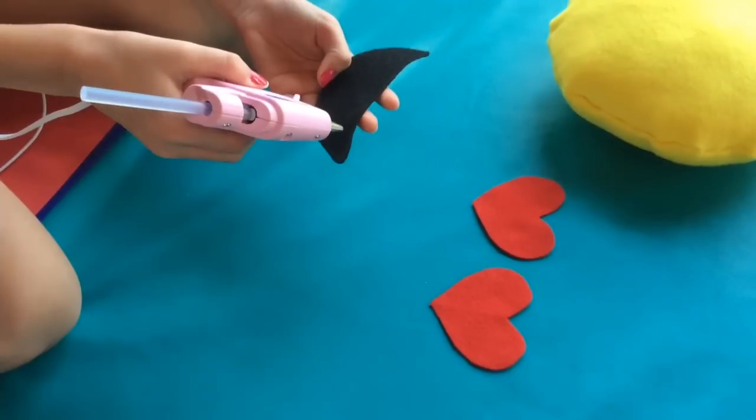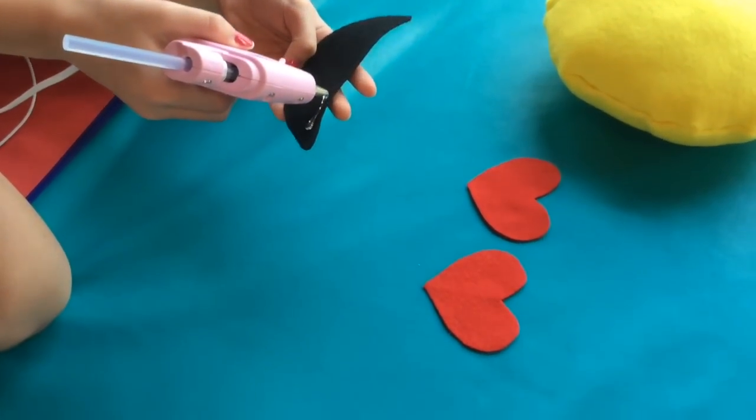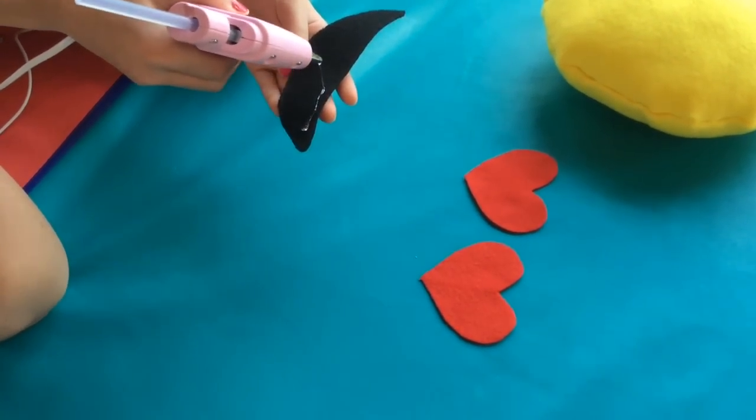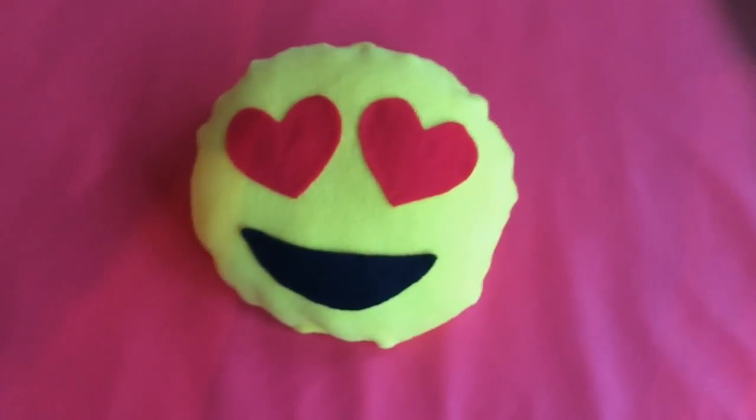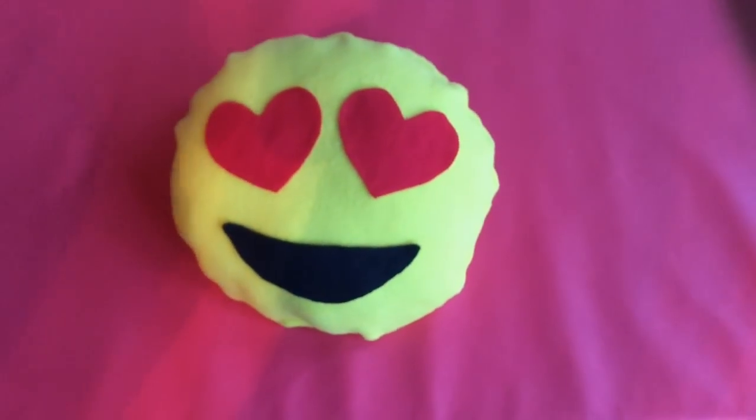And then you are going to hot glue gun the objects of your emoji onto the circular object, which will be the face. And it should look a little something like this when you are done.